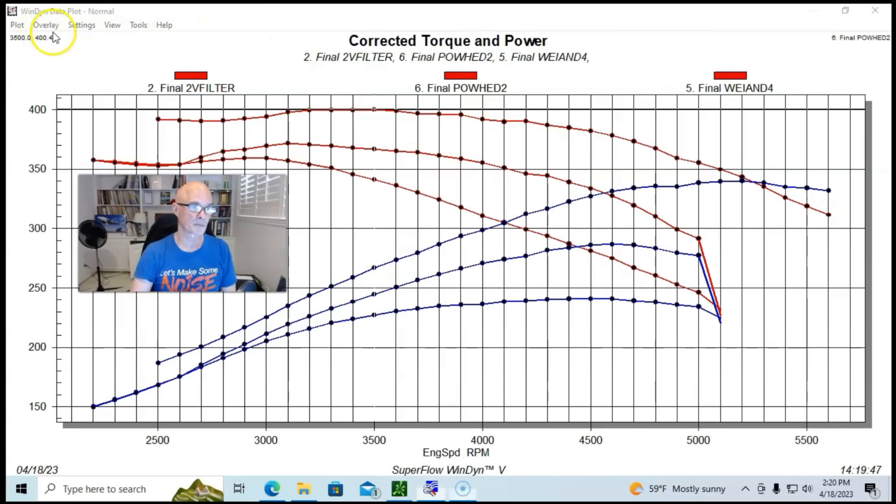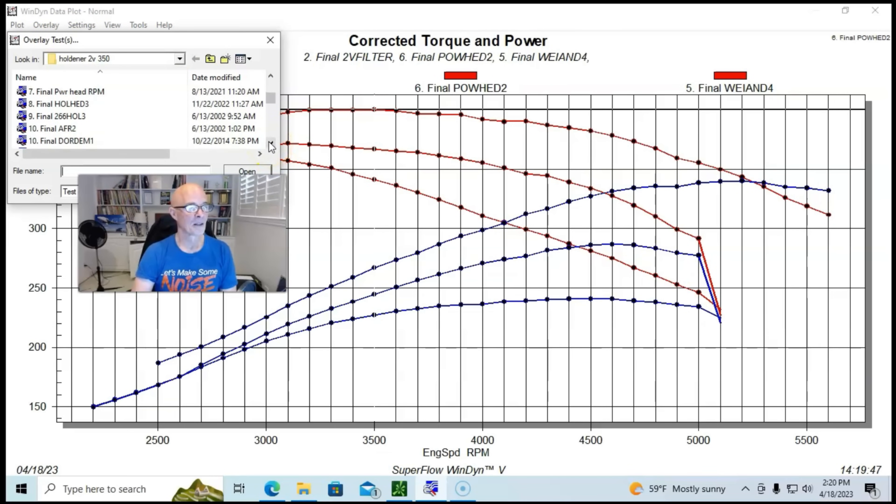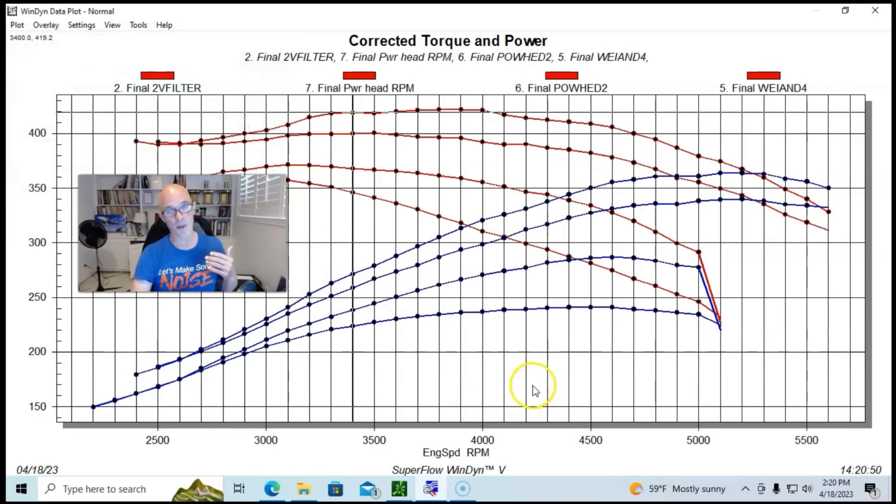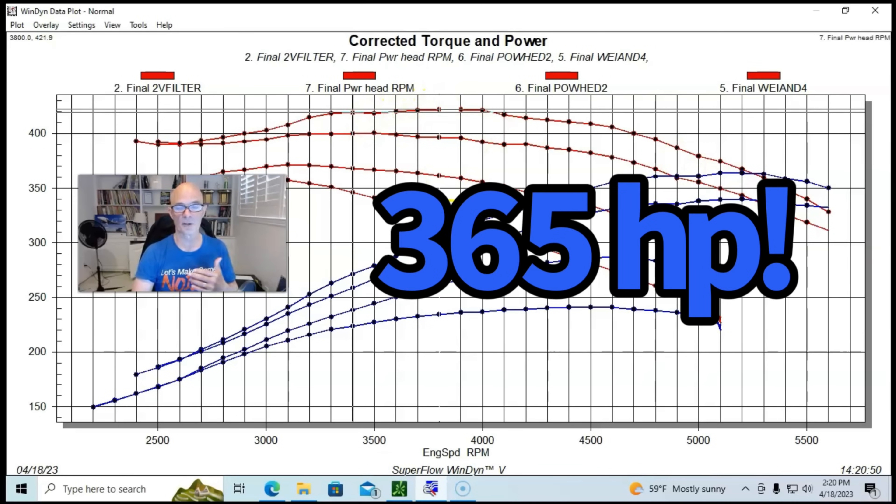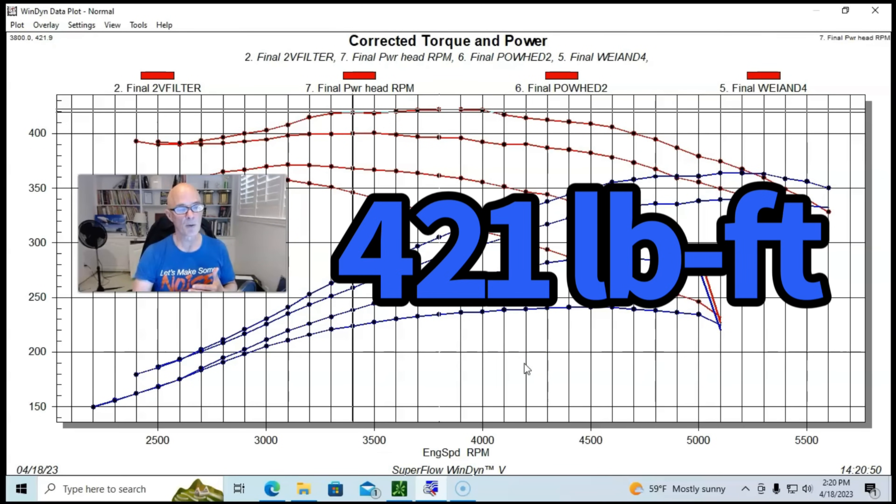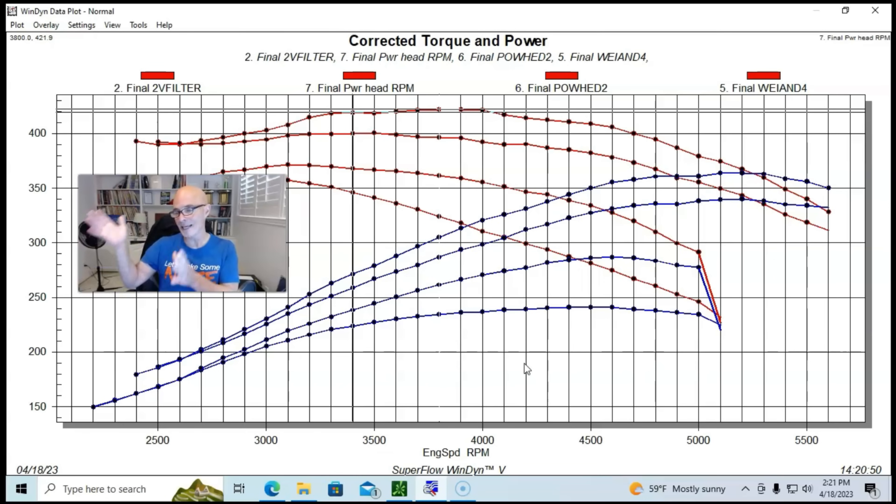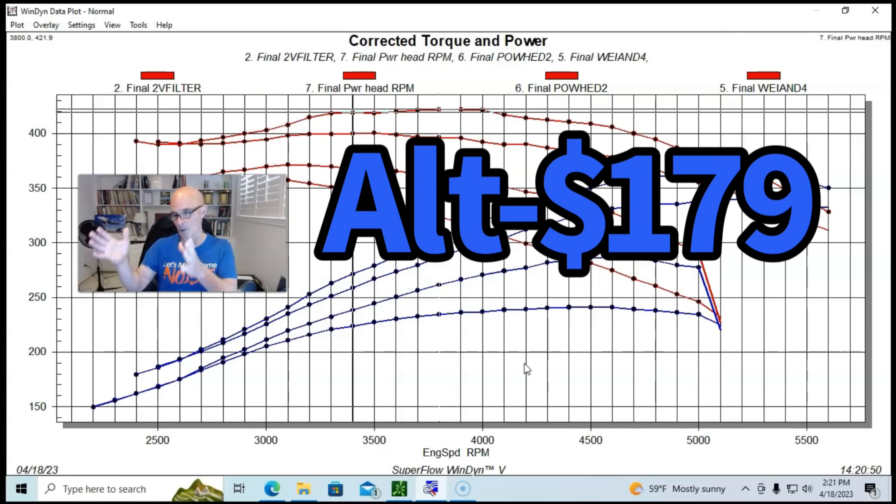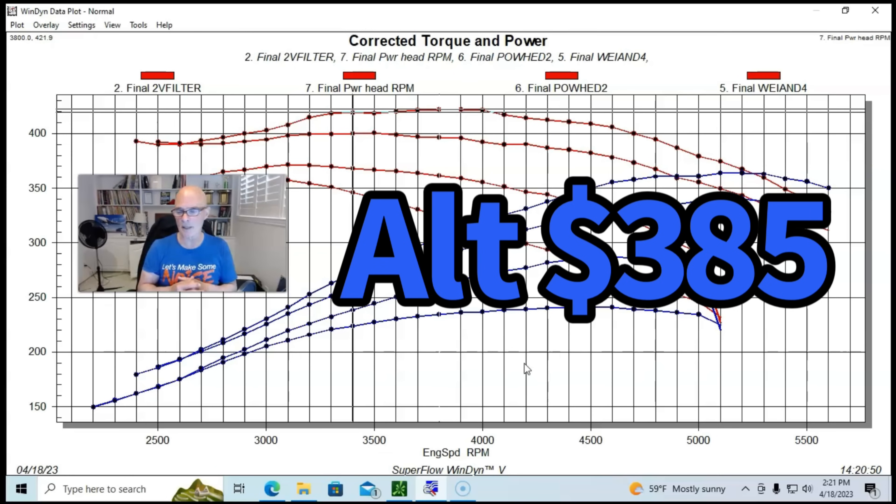Now let's take a look at some more elaborate and more expensive modifications. After we did the Power Head upgrade, what we did was upgrade the induction system. That's this highest point right here: 419 horsepower and 421 foot-pounds of torque. What we did was replace the Weiand intake manifold and Q-jet with a different intake manifold and carburetor. We installed an Edelbrock Performer RPM Air Gap - kind of the go-to intake manifold for this power range and RPM range in the small block Chevy - and a 650 Demon carburetor.